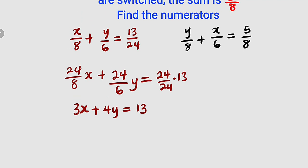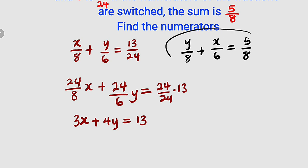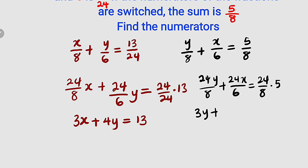Then the other one, I want to do the same thing. Multiply everything here by 24. So we have 24y divided by 8 plus 24x divided by 6 equal to 24 divided by 8 multiplied by 5. 8 into 24 is 3, so we have 3y here, plus 6 into 24 is 4, so we have 4x here, equal to 8 into 24 is 3, and 3 times 5 is 15.